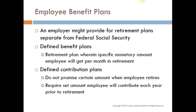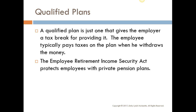Employee benefit plans are separate from Social Security. Somebody might get a set amount each month in retirement, but what's more common now is a defined contribution plan — there's no set amount the employee will get, and the employee typically has to help contribute to get that. A qualified plan allows the employer to get a tax break for offering it. For paralegals, most law offices will offer a 401k plan — named for the IRS code section — where the law firm gets a tax break, you can contribute, and the employer typically matches somewhat.